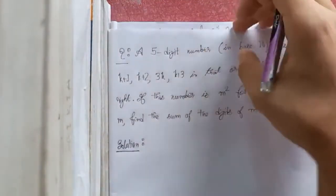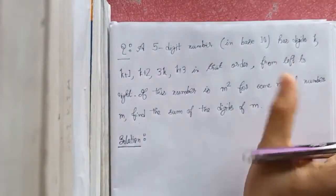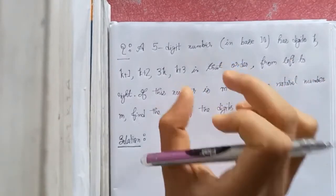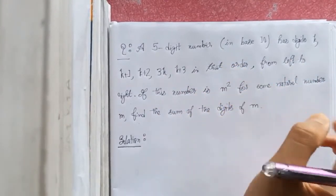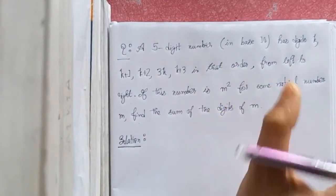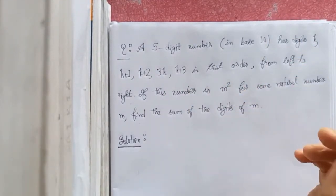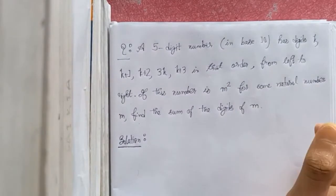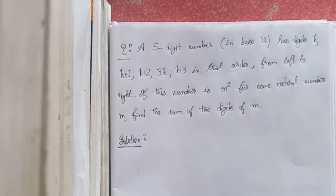A 5-digit number in base 10 has digits k, k+1, k+2, 3k, k+3 in that order from left to right. If this number is m squared for some natural number m, find the sum of the digits of m.